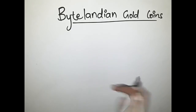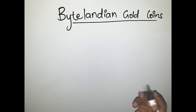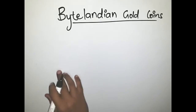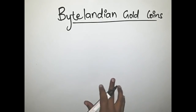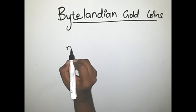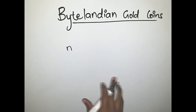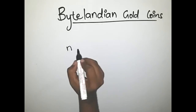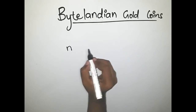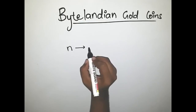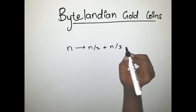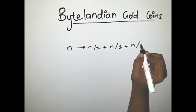This problem is from the medium section of CodeChef but if you know dynamic programming well you won't find it that difficult. So let us see what the problem is. You have n number of coins and what you could do is you could replace these n number of coins with three sets of coins — that is, you could replace n with n/2 plus n/3 plus n/4 number of coins.